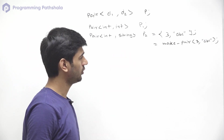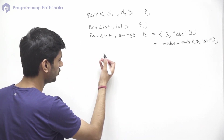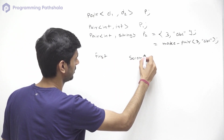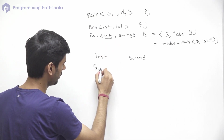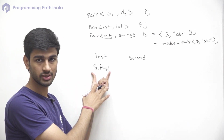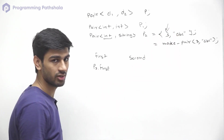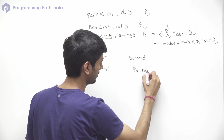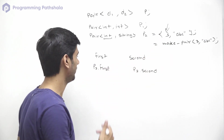To access values from a pair we use two keywords: first and second. Using pair.first we can access the first value — this gives us access to the first object. Similarly, using pair.second we can access the second object. We can use these to either fetch or update the value.